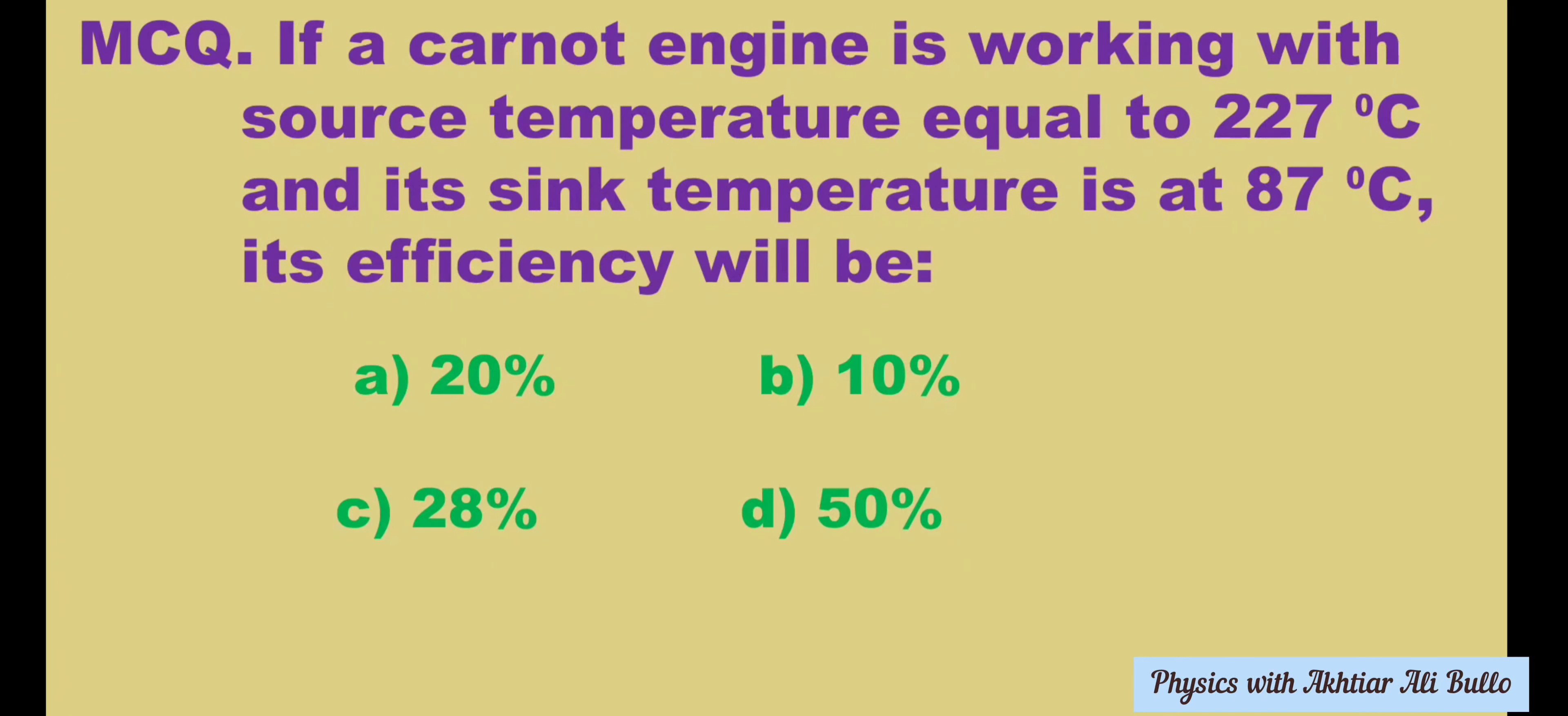To calculate the efficiency of Carnot's engine, we will use the formula: η = (1 - T2/T1) × 100%.